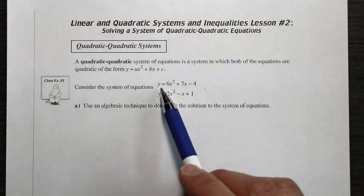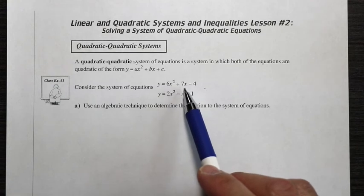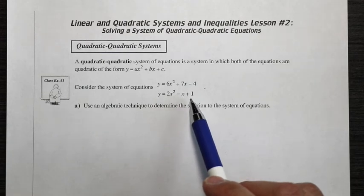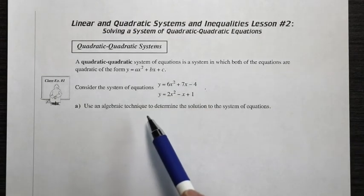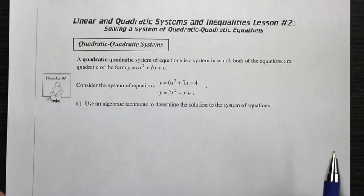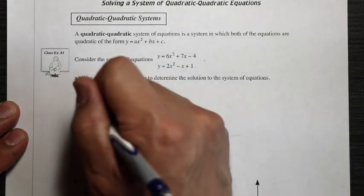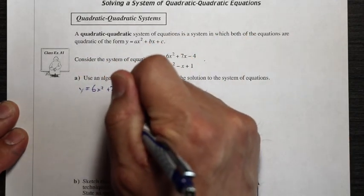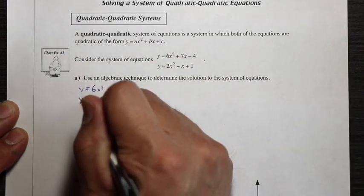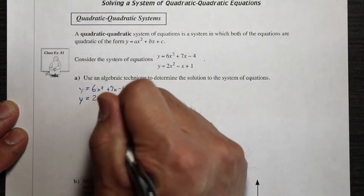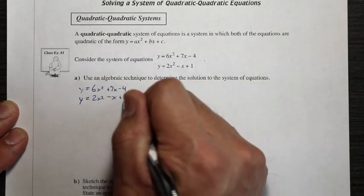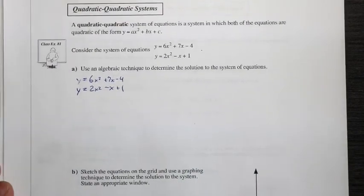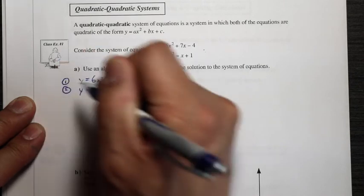We have a system of equations. The first equation is y equals 6x squared plus 7x minus 4. The second equation is y equals 2x squared minus x plus 1. We're going to use an algebraic technique to determine the solution to the system. So let's write them both out — we'll call this equation 1 and this equation 2.